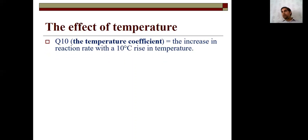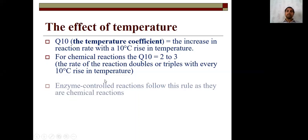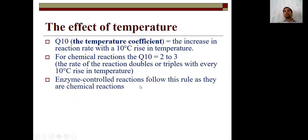Now, temperature. Q10 — mind well, this may be asked in exams. What is Q10? Q10 is the quotient 10. Q10 states that with every 10 degree rise in temperature, the reaction rate increases. For chemical reactions, the rate of reaction is doubled or tripled with every 10 degree rise in temperature. But in the case of enzymes, it is not like this — enzymes do not follow these rules strictly.